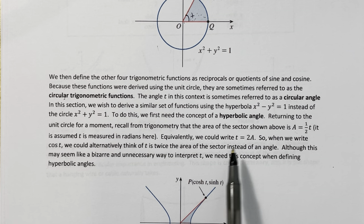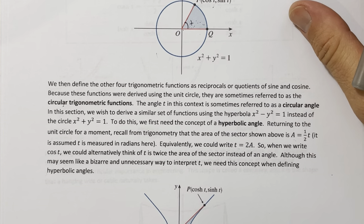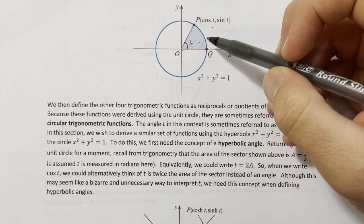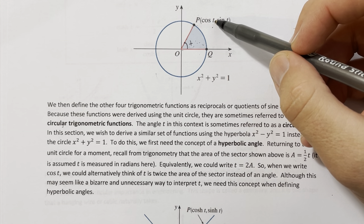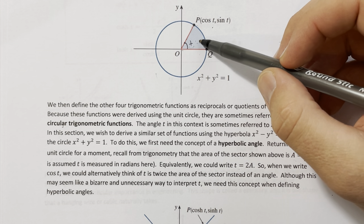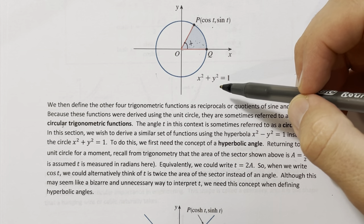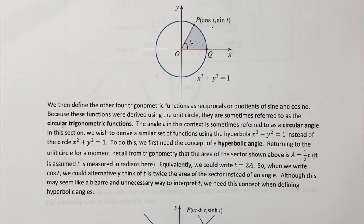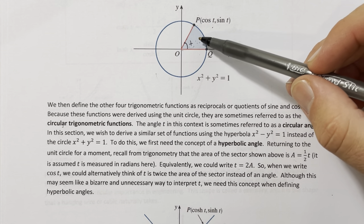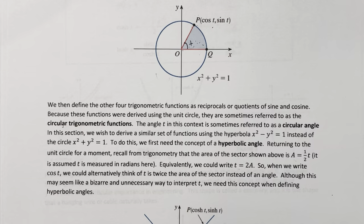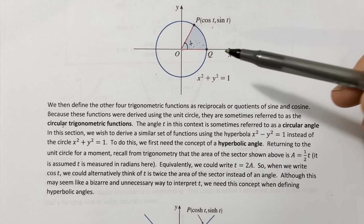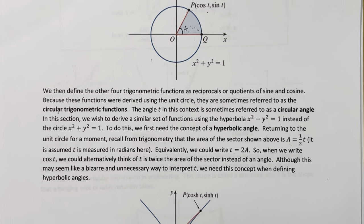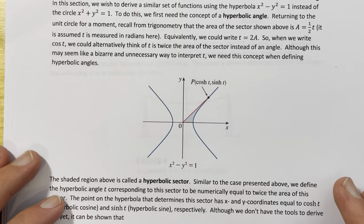We could write t equals 2A, where A is the area of that sector. So even though we normally think of t as an angle, we could alternatively think of t as twice the area of the sector that point P determines. It seems bizarre to want to do that, but it actually has nothing to do with circular functions — it has to do with how we move this idea into the hyperbolic functions.